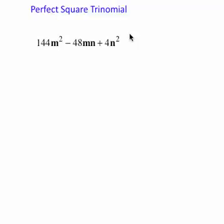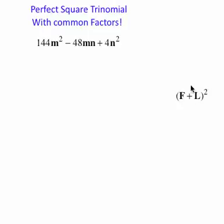So we're doing perfect square trinomials with common factors. So what goes into 144, into 48, and into 4? Why 4 does. So if it is a perfect square trinomial, it follows the first plus last all squared pattern giving us first squared plus 2 times first times last plus last squared. These are the properties, you know that.